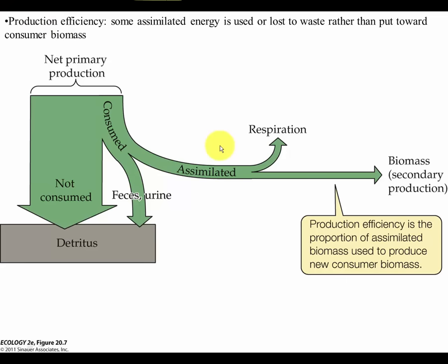Finally, there's production efficiency. Organisms can't use all of the energy they take in to make new biomass because they must use some of it just to keep their cells alive, and energy is also wasted as heat radiated off the body. So we've got consumption efficiency, assimilation efficiency, and production efficiency — these are all points at which energy is lost as it moves from one trophic level to another up the food chain.